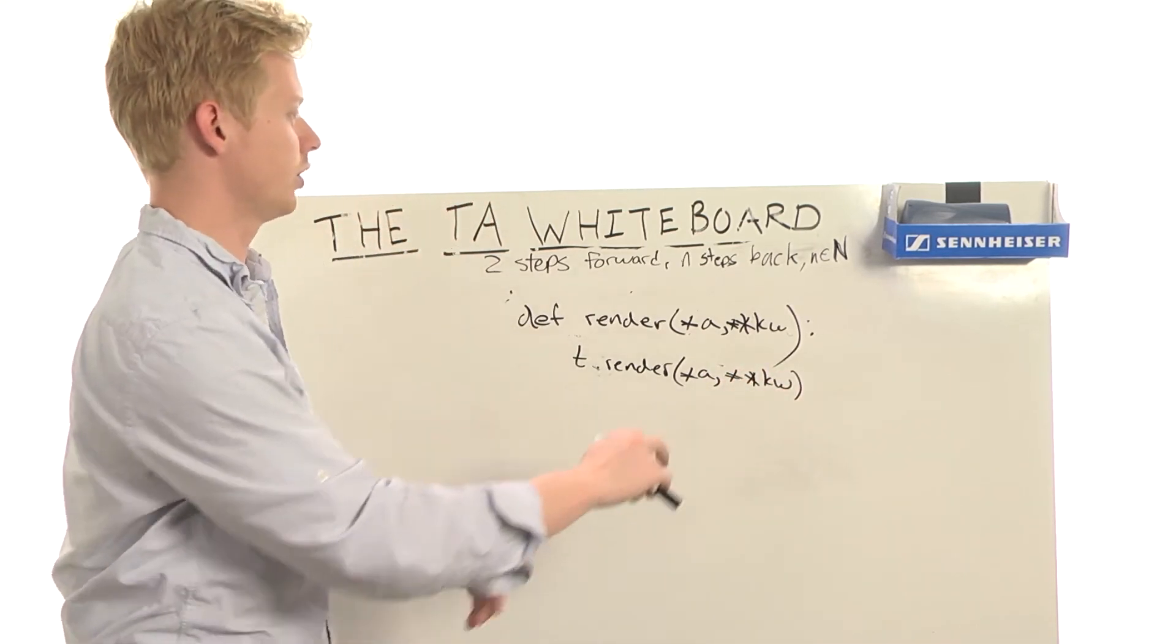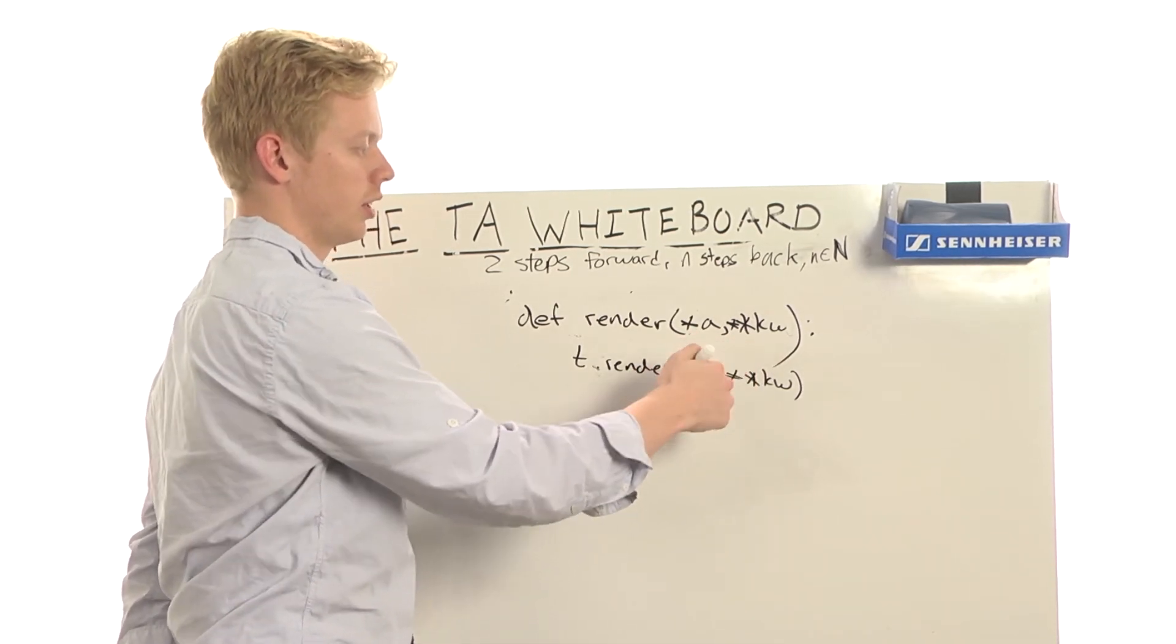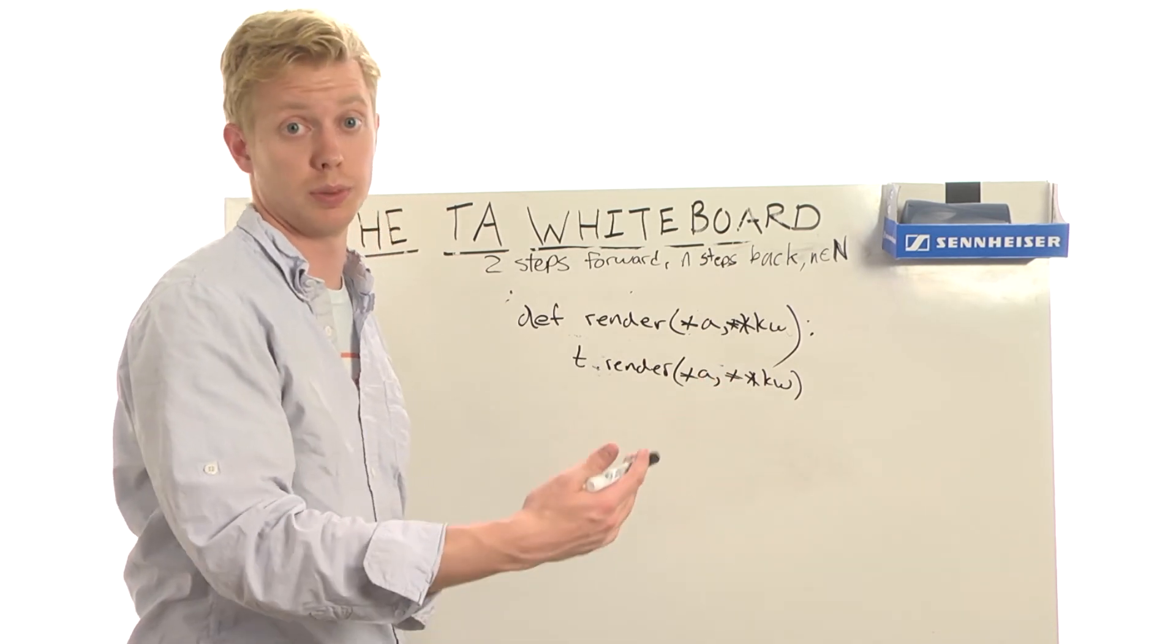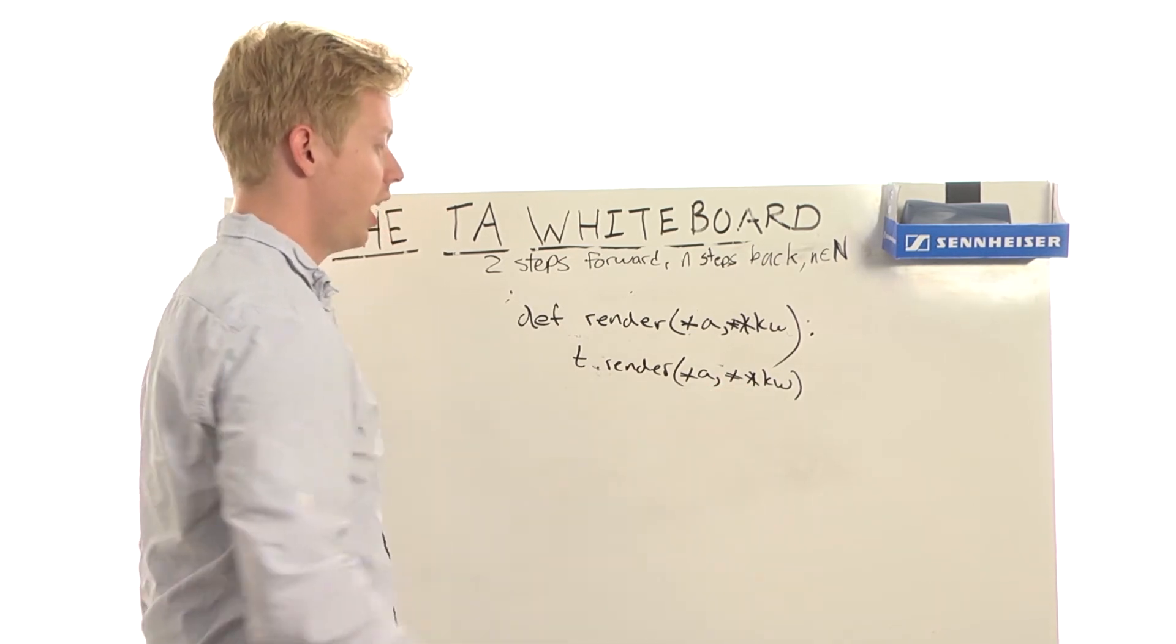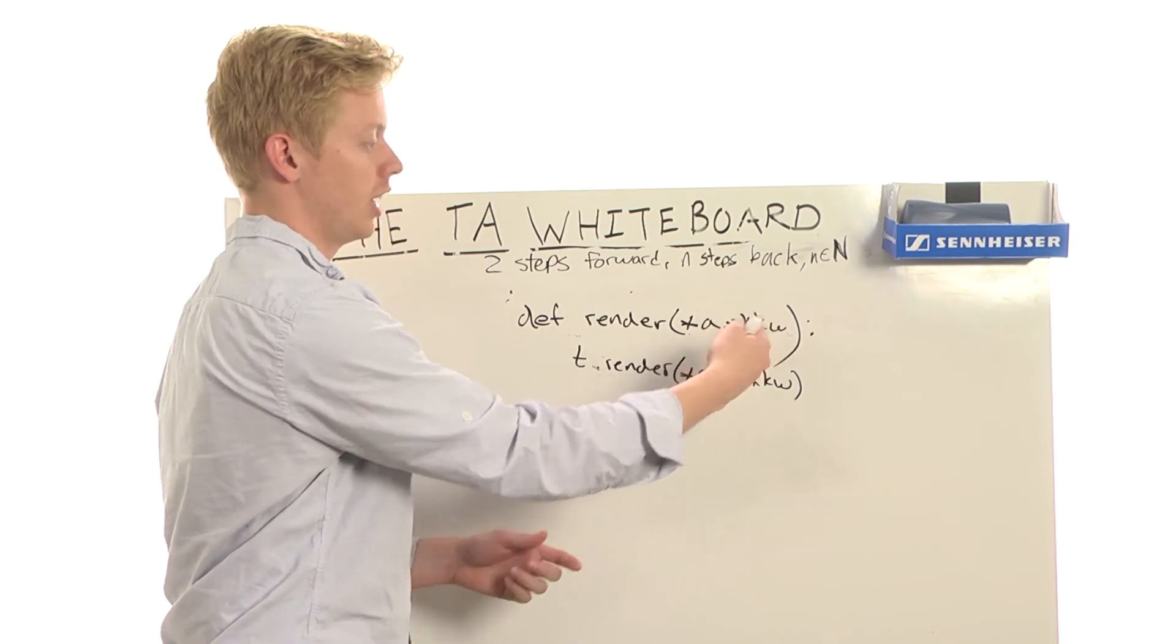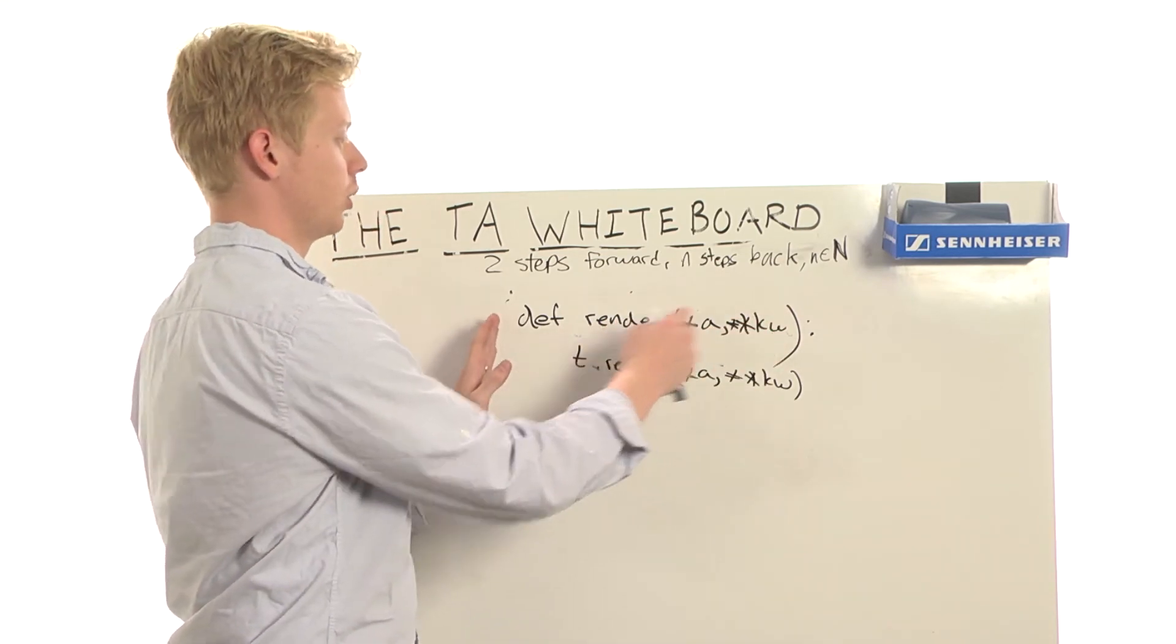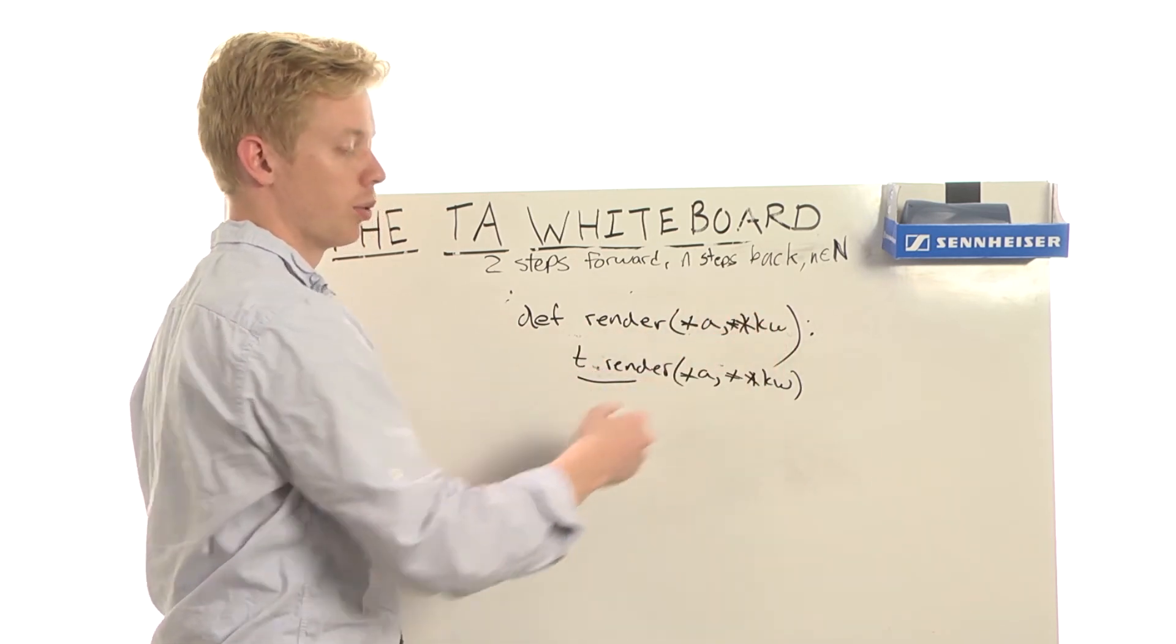And basically all this is doing is just taking the arguments from this function, the unnamed arguments, and the named arguments. A named argument would be like, you know, x equals 1, versus an unnamed argument which would just be 1. And I'm passing those directly into another function. And probably what I did here in my render function in my code is I modified this kw argument. I added some parameters to it, that sort of thing. And so basically now I have this function render, which does exactly what t dot render does, except I've added more parameters to kw.